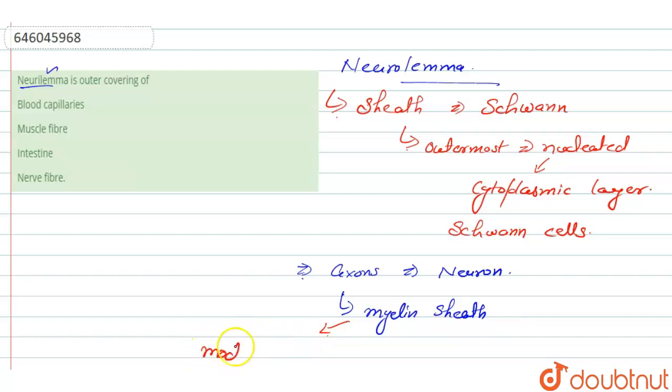Now what is this myelin sheath? This myelin sheath is the modified—it is a modified cellular membrane—that wrapped around the axon. So this neurolema is lying just outside this myelin sheath.